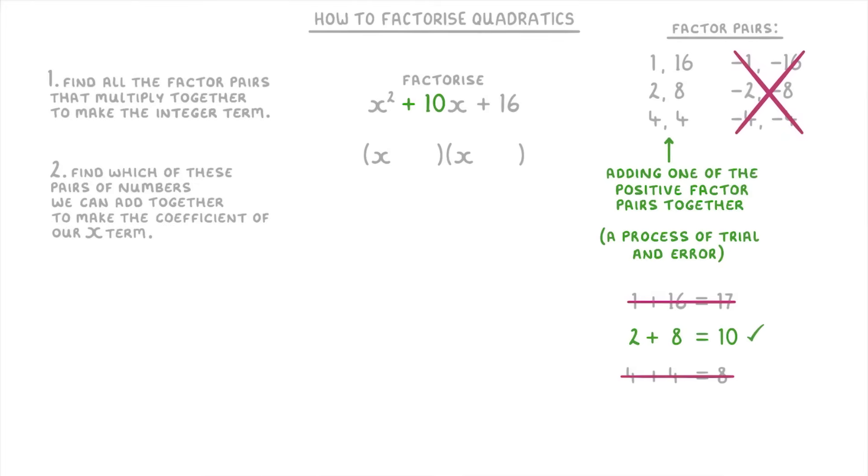The final step is then to put these numbers into the brackets. So because we know that the correct pair is positive 2 and positive 8, we just put plus 2 in one bracket and a plus 8 in the other one. And that's it, we've got our answer.